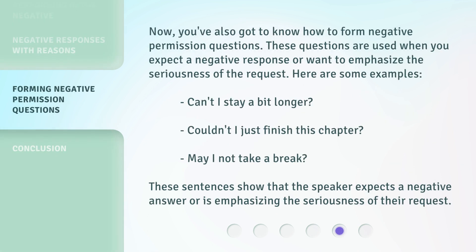Now, you've also got to know how to form negative permission questions. These questions are used when you expect a negative response or want to emphasize the seriousness of the request. Here are some examples. These sentences show that the speaker expects a negative answer or is emphasizing the seriousness of their request.